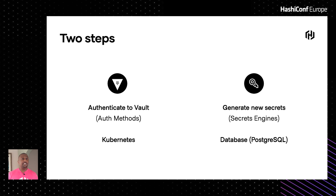Once authenticated, Vault uses another concept called secrets engines to generate a short-lived credential for the Postgres database. The database secrets engine goes to the database, creates a username and password, and passes it back to the requesting API. Once the credential expires, it goes back to the database and cleans it all up.